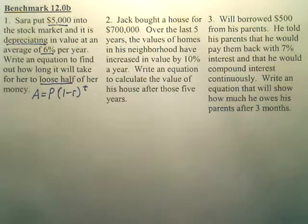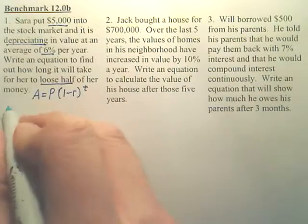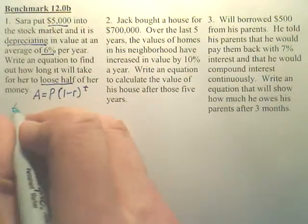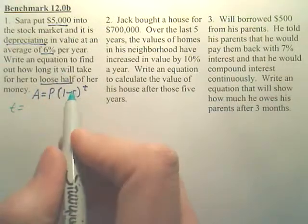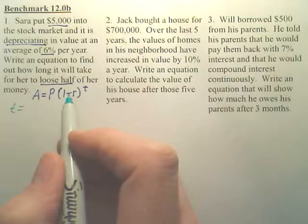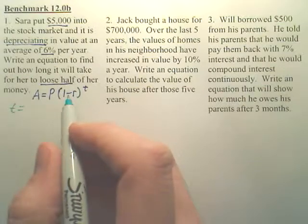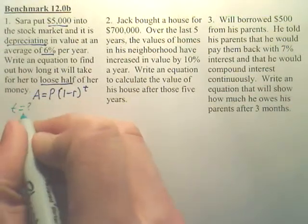So from there, we need to find these values. First thing is T. What's your T? T is time. How much time do we have here? We don't know that. That's what we're trying to find.